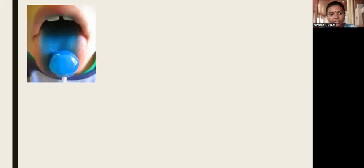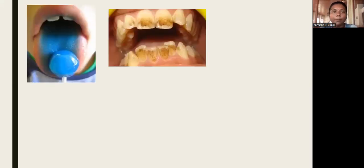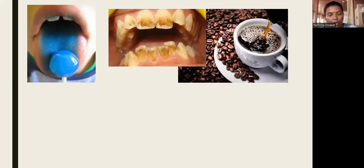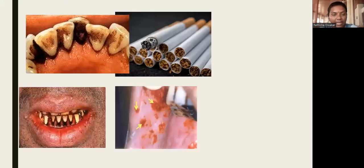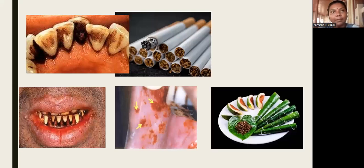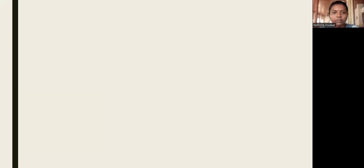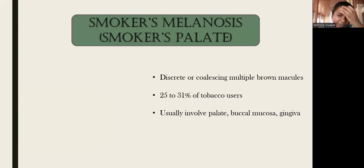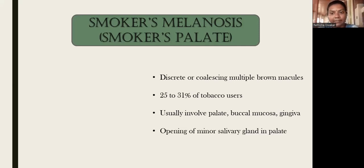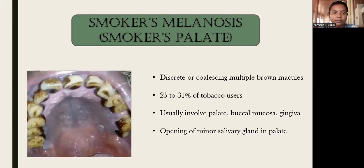After dental or medical history, we have to ask for habit history. Betel nut use can cause pigmentation of perioral and oral structures. Excess usage of coffee can stain teeth. Tobacco stains can cause pigmentation of teeth. Excessive use of betel quid can cause pigmentation of the mucosa known as oral submucous fibrosis. Smoker's palate and smoker's melanosis are mainly caused by excess tobacco use, presenting as discrete or diffuse multiple brown macules, commonly involving the palate, buccal mucosa, and gingiva.